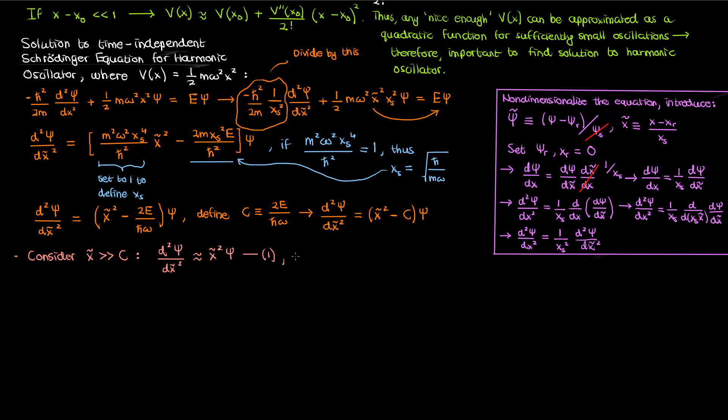But solving this extreme case is also not a trivial task. Luckily though we can pull some tricks. The trick I'll use is that I'll suppose that my solution psi takes the form of a linear combination of e to the f of x tilde and e to the negative f of x tilde where f is some function of x tilde that I need to determine. This function could be anything, we don't know yet.